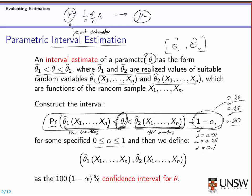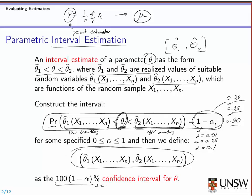You can also write the interval in this form. The notation is 100 times 1 minus alpha percent confidence interval, where alpha is 0.01 or 0.05, or typically any small value.